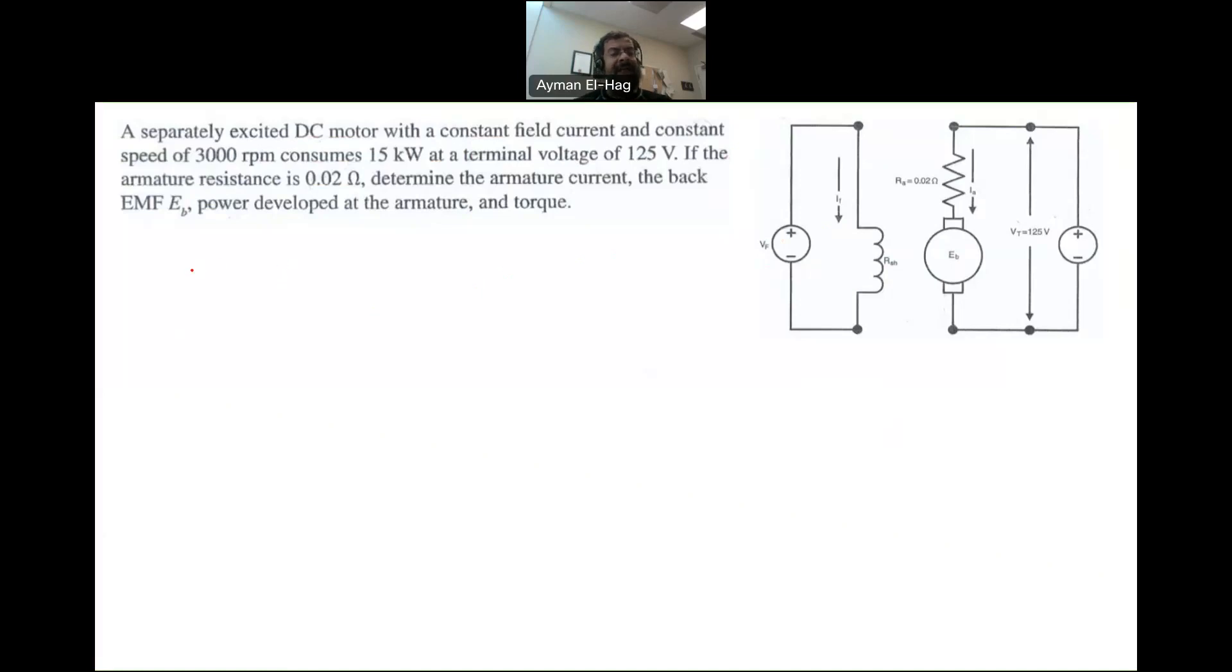And we have a constant speed. The speed is given to us at 3,000 RPM. The motor consumes at the input side, so PN of the motor is equal to 15 kilowatt. So that is how much power it is consuming. And this is at a terminal voltage, VT is equal to 125 volt.